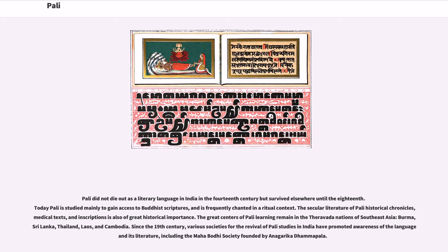Pali did not die out as a literary language in India in the 14th century but survived elsewhere until the 18th. Today Pali is studied mainly to gain access to Buddhist scriptures and is frequently chanted in a ritual context. The secular literature of Pali — historical chronicles, medical texts, and inscriptions — is also of great historical importance. The great centers of Pali learning remain in the Theravada nations of Southeast Asia: Burma, Sri Lanka, Thailand, Laos, and Cambodia. Since the 19th century, various societies for the revival of Pali studies in India have promoted awareness of the language, including the Mahabodhi Society founded by Anagarika Dhammapala.